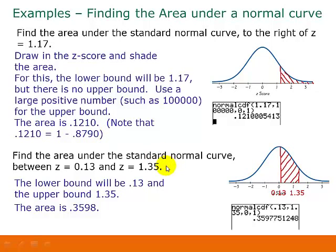Now sometimes we do have both values. So now let's find the area under the standard normal curve between z equals 0.13 and z equals 1.35. So we would mark both of those on our picture, shade in between them. And this is pretty simple. We're going to use 0.13 for our lower bound, 1.35 for our upper bound. And again, since we're talking about a standard normal curve and we're talking about z, then we're going to use 0 for our mean and 1 for our standard deviation. So the area under the curve between 0.13 and 1.35 is 0.3598.